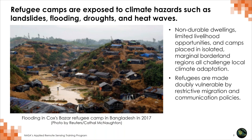As discussed in previous parts of this training, there is a global distribution of refugee camps and settlements around the world. Many have non-durable dwellings — ephemeral or temporary structures built without formal safety protocols that would help protect against or mitigate the effects of landslides or flooding. Camps are often placed in isolated and marginal borderlands, which contributes to climate exposure. Refugees are also made vulnerable by restrictive migration and communication policies, limiting access to early warnings and evacuation options.